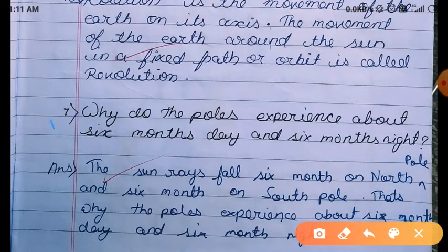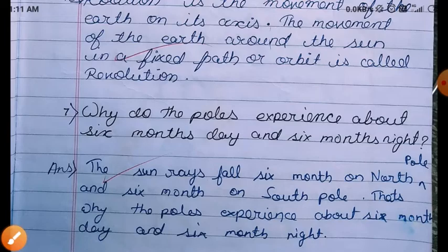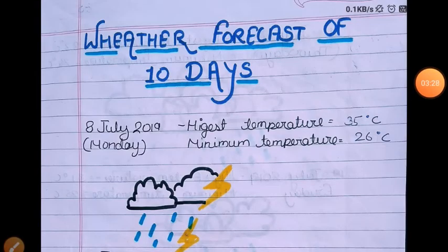Question Number 7: Why do poles experience about 6 months of day and 6 months of night? The sun rays fall for 6 months on the North Pole and 6 months on the South Pole. That is why the poles experience about 6 months of day and 6 months of night.